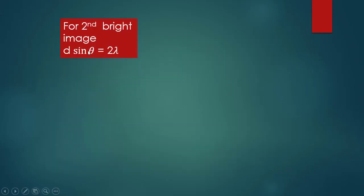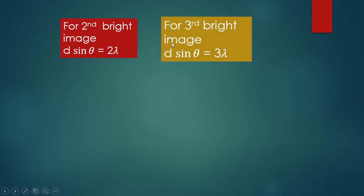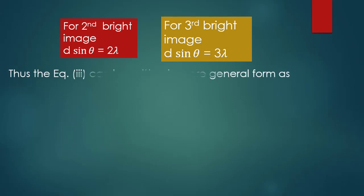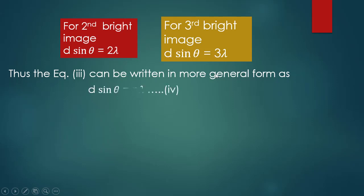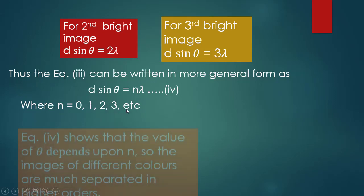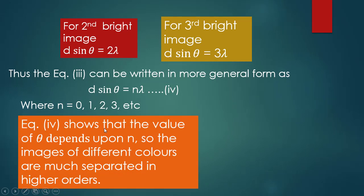For the second bright image, D sin theta equals 2 lambda. For the third bright image, D sin theta equals 3 lambda. Thus equation 3 can be written in the more general form: D sin theta equals n lambda, where n equals 0, 1, 2, 3, etc. Equation number 4 shows that the value of theta depends upon n.